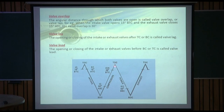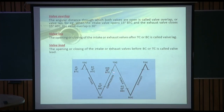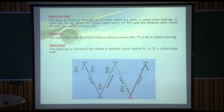Before the piston reaches TDC, the ignition event happens through the spark plug. Early ignition timing allows the fuel-air charge to burn completely. When the piston starts moving from TDC towards BDC, the heat and pressure created by the burning fuel-air mixture pushes the piston down — this is called the power stroke, because power is being developed during this stroke.